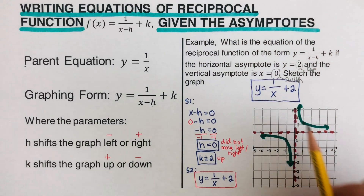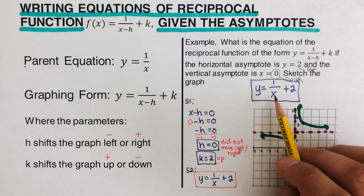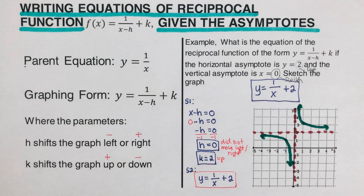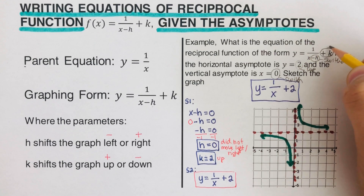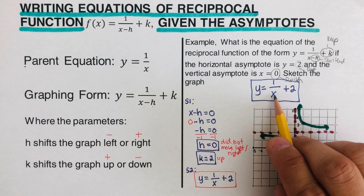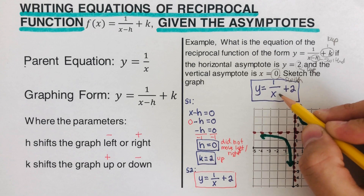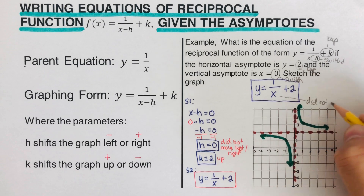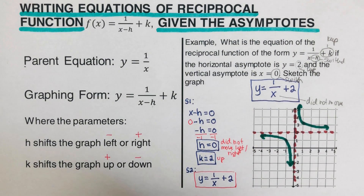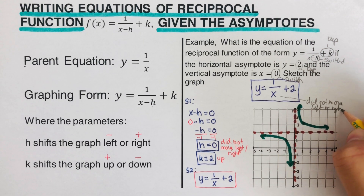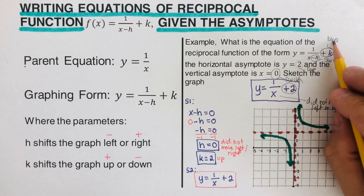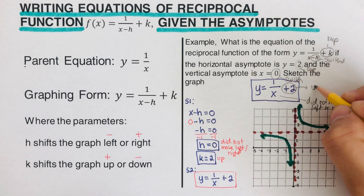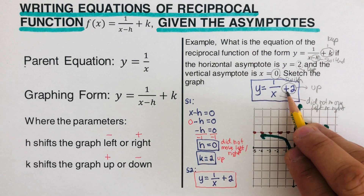Using the shortcut, we can read the movement directly from the equation. Remember: the denominator part is switched, and the constant part is kept. Since x has no added value, h = 0 — neutral, no left or right movement. The constant is positive 2 and we keep the sign, so the graph moved up. Both interpretations match.